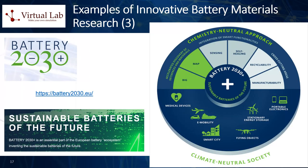Sixth, advanced manufacturing techniques: techniques like atomic layer deposition, ALD, are being used to precisely engineer battery materials at the nanoscale, leading to improved performance. Similarly, advanced characterization techniques are providing new insights into battery materials and processes, enabling further innovation. Seventh, next-generation supercapacitors: while not technically batteries, supercapacitors store energy and can deliver it quickly. They typically don't hold as much energy as batteries but can charge and discharge rapidly over very large numbers of cycles. Research into new materials like graphene and other conductive polymers are improving the energy density of supercapacitors.